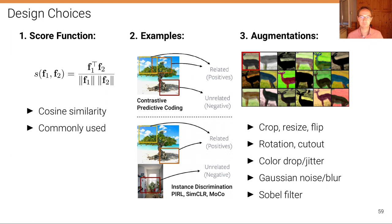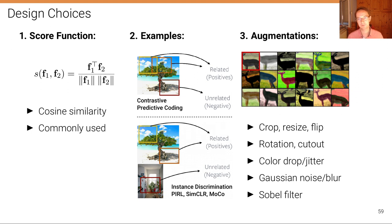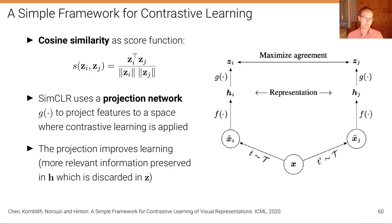The third design choice is augmentations. In contrast to pretext tasks, we can combine all the augmentations we want, and this is what happens in practice — it's really important for making these methods work. For example, we can crop, resize, flip, rotate, or cut out regions from images; we can drop or jitter colors; we can add Gaussian noise or Gaussian blur; or compute edges.